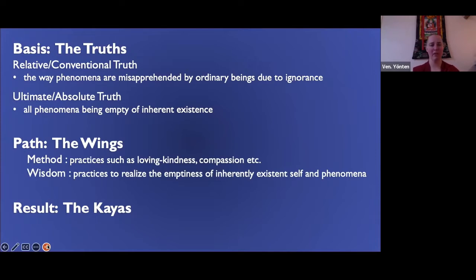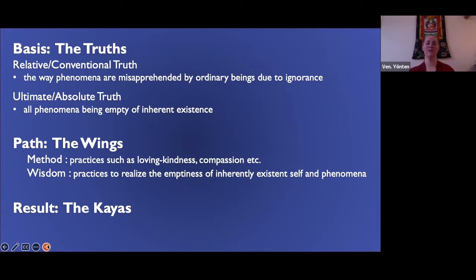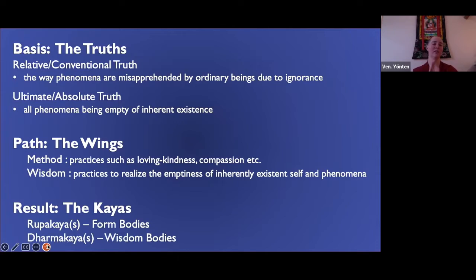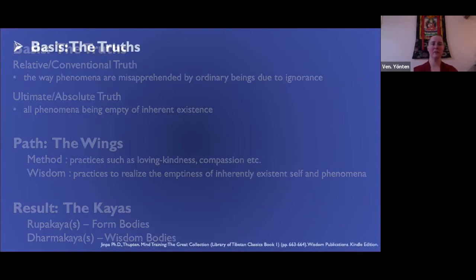The path then is method and wisdom. Method practices are related to relative truth — such as loving kindness, compassion, patience, all the warm-hearted good things. Wisdom is related to ultimate truth — practices to realize the emptiness of inherent existence of self and phenomena. The result of practicing method related to relative truth are the rupakayas, the form bodies.